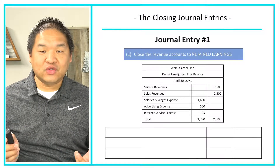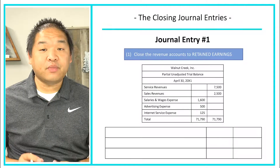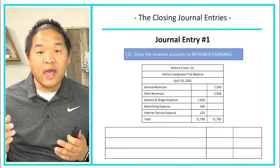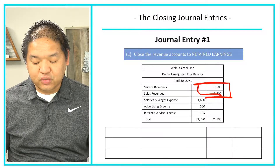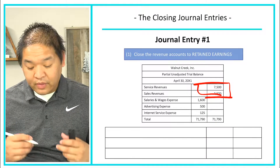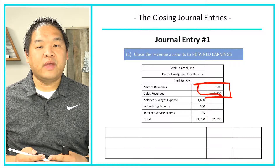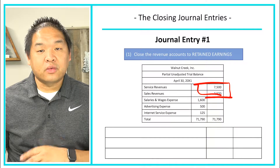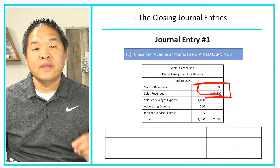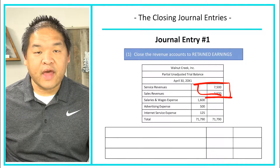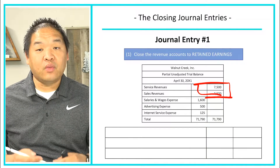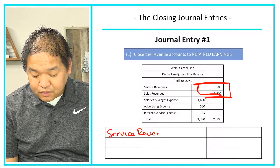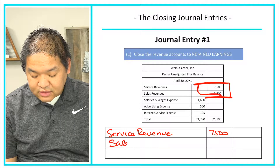The first journal entry is closing all of our revenue accounts to retained earnings. This is a partial unadjusted trial balance. We have two revenue accounts: a $7,500 service revenue and a $2,500 sales revenue. To close them out we need to make them zero, so we debit the opposite of what they already are. Since they are credits, we're going to debit service revenue for $7,500 and debit sales revenue for $2,500.